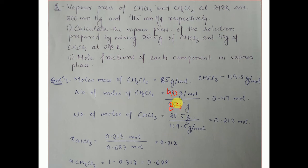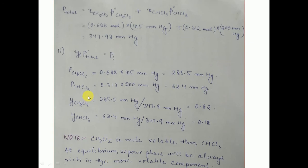For CH2Cl2, 40 divided by 85 gives 0.47 moles. For CHCl3, 25.5 grams divided by the molar mass of CHCl3 gives 0.213 moles. We then calculate the mole fractions and substitute into the Raoult's Law equation: P total = (mole fraction of CH2Cl2 × 415) + (mole fraction of CHCl3 × 200). The total pressure comes out to 347.92 mmHg.